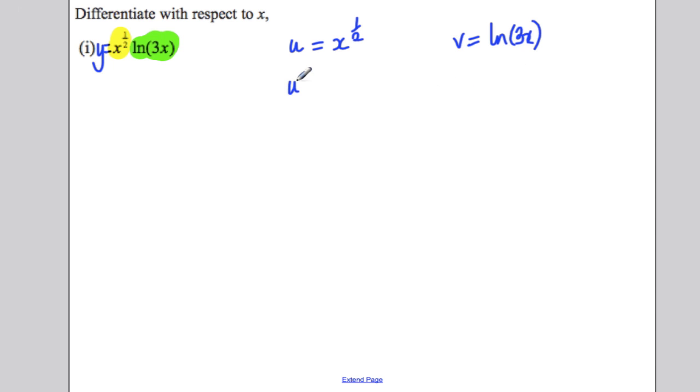Therefore, your u dash: differentiating a polynomial, bring down the half, keep the x and reduce it by 1. So a half minus 1 is negative a half. Now differentiating this, I'm going to say that the answer is 1 over x, and I'm going to explain here why that is.